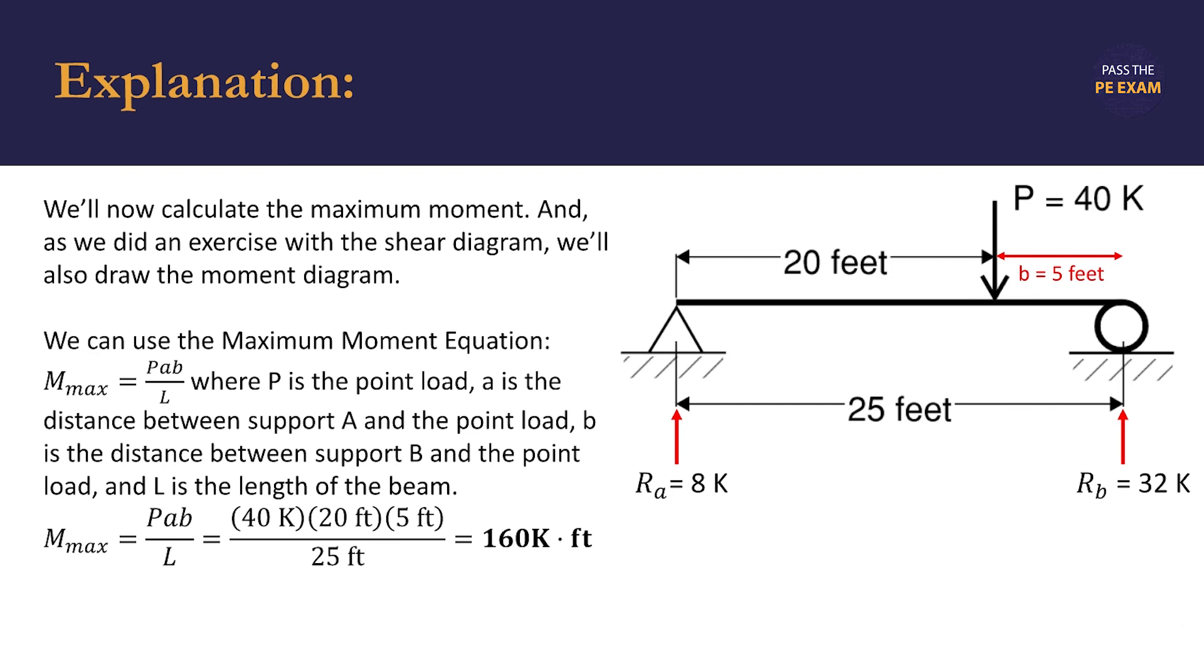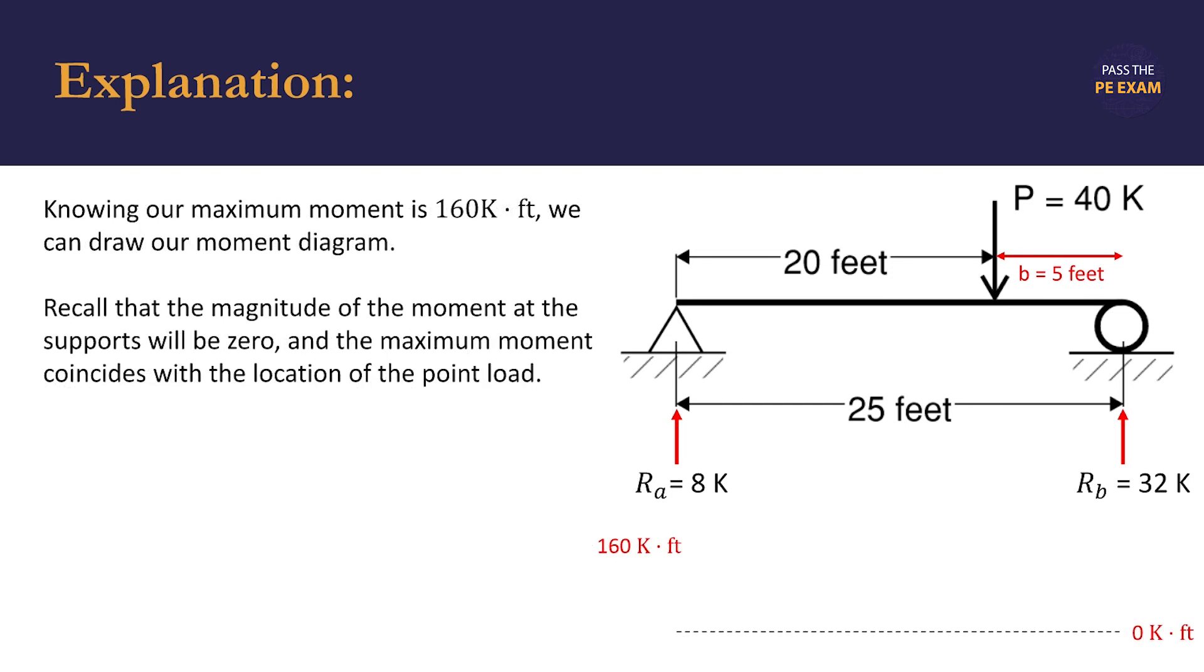Knowing that our maximum moment is 160 kip-feet, we can draw our moment diagram. Recall that the moment at the supports must be zero, and the maximum moment coincides with the location of the point load.